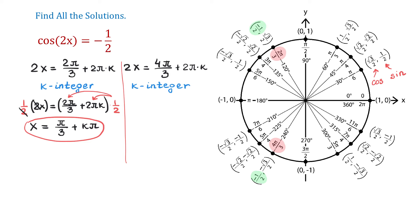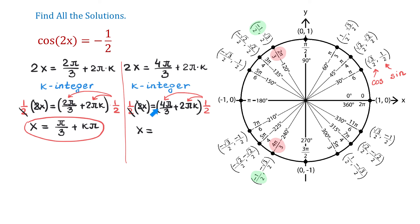Now let's solve the second equation for x. Again we multiply both sides by 1 half. On the right side we have 4π over 3 plus 2πk, all multiplied by 1 half. Using the distributive property, 4π over 3 times 1 half gives 2π over 3, and 2πk times 1 half gives πk. So x equals 2π over 3 plus kπ, and this is another set of solutions.